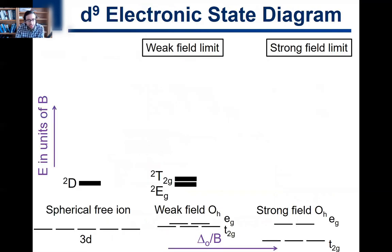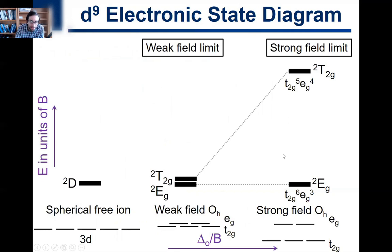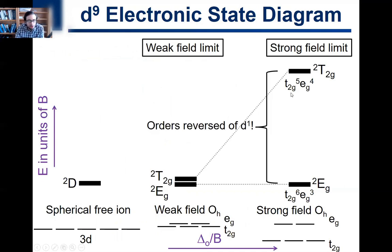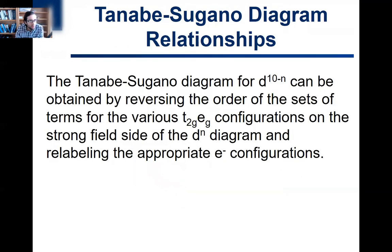So the orders are reversed compared to D1: the T2G goes up and EG stays the same. This relationship turns out to be true for all the Dn / D10 minus N pairs in the Tanabe-Sugano diagrams. The Tanabe-Sugano diagram for D10 minus N can be obtained by reversing the order of the sets of terms for the various T2G / EG configurations on the strong field side of the Dn diagram, and relabeling the appropriate electron configurations.